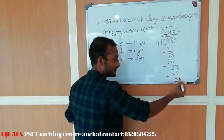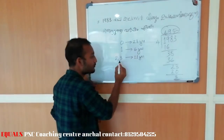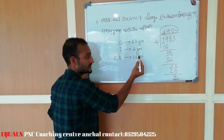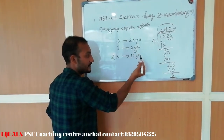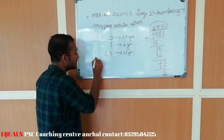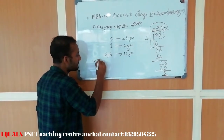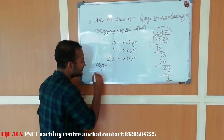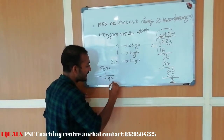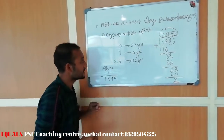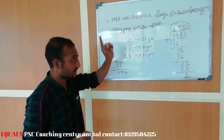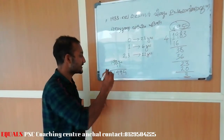In the second step, we will do 4. This represents the 6th plus 3, which is the 4th plus 3. We will do 4. So again, our next step in the second step, we will do 4.